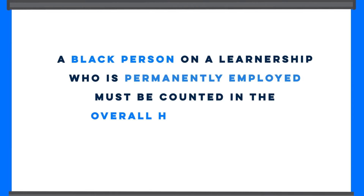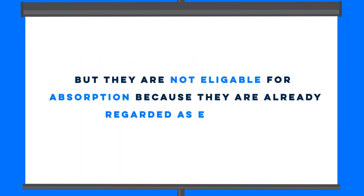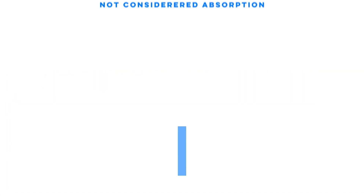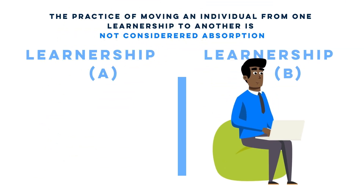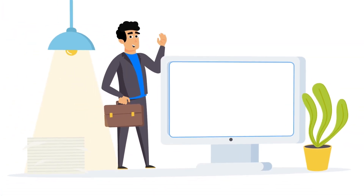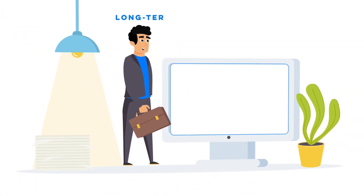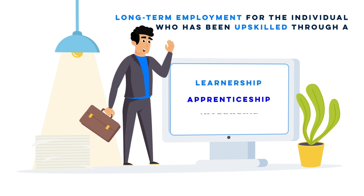Secondly, a black person on a learnership who is permanently employed must be counted in the overall headcount for absorption, but they are not eligible for absorption because they are already regarded as employed. Lastly, the practice of moving an individual from one learnership to another is not considered absorption. Companies should be aware that this will not qualify as such. The absorption objective is clear: long-term employment for the individual who has been upskilled through a learnership, apprenticeship or internship.